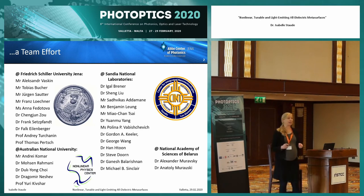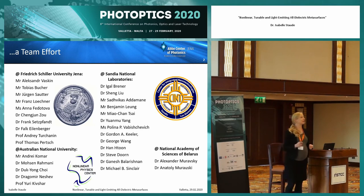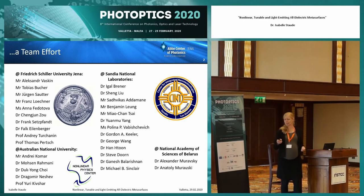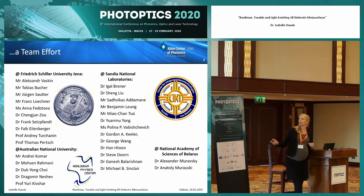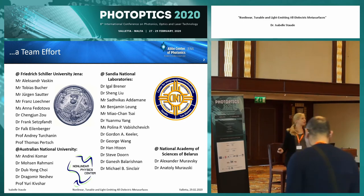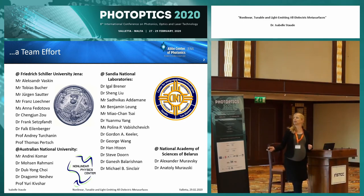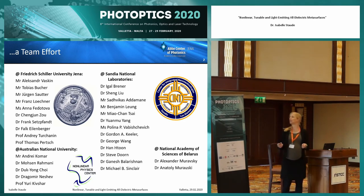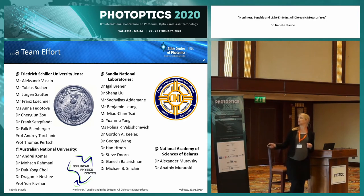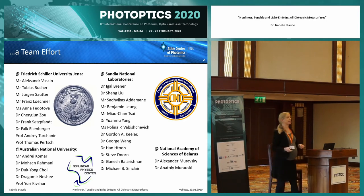Having such a slide is also dangerous because it's never possible to list all the people who really contributed. But just to point out a few: there's a big collaboration within Jena with the groups of Thomas Perch, Frank Sertzvahn, Veil Einberger, and Andrei Turchanin. We also closely collaborate with Australian National University where I was previously, and here Dragomir Neshev and Yuri Kivsha are my main collaborators. Igal Brenner's group at Sandia National Labs is also an important collaborator, and I also show some work where we collaborated with Alexander Murawski and his team.